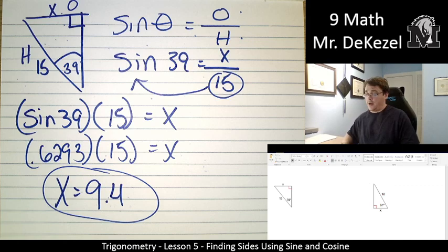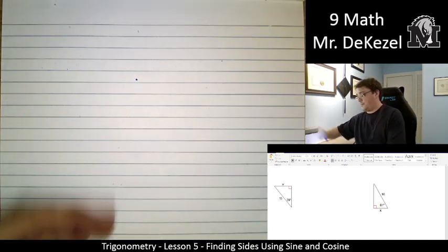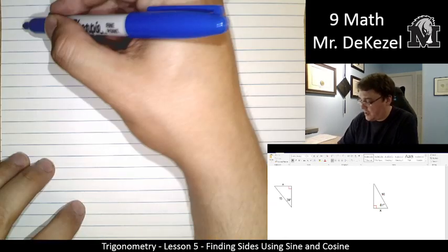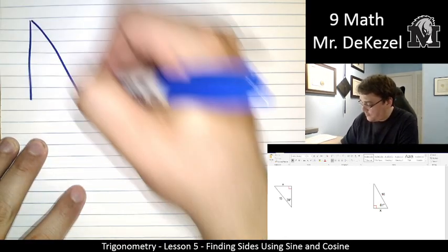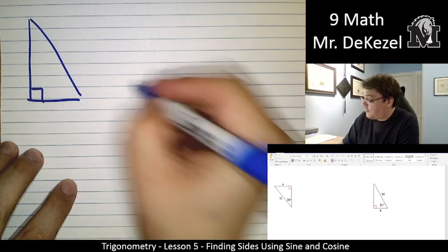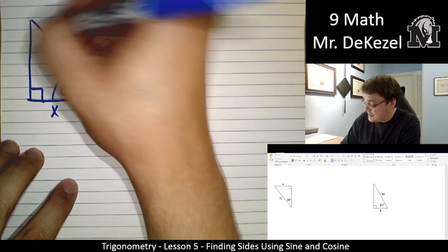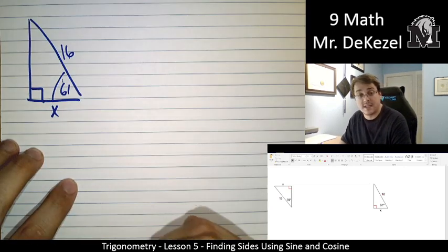9.4 for our answer. And again, it's less than a hypotenuse. That makes sense. Just easy things to just confirm that they make sense or they don't. If you've made a mistake. All right. We have an angle of interest of 61. This bottom side, x. And the hypotenuse is 16.